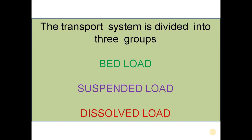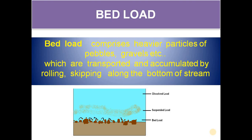The transport system is divided into three groups: bed load, suspended load, and dissolved load. Bed load comprises heavier particles of pebbles and gravels, which are transported and accumulated by rolling and skipping along the bottom of the stream. One can find pebbles and gravels at the bottom of the river or stream.